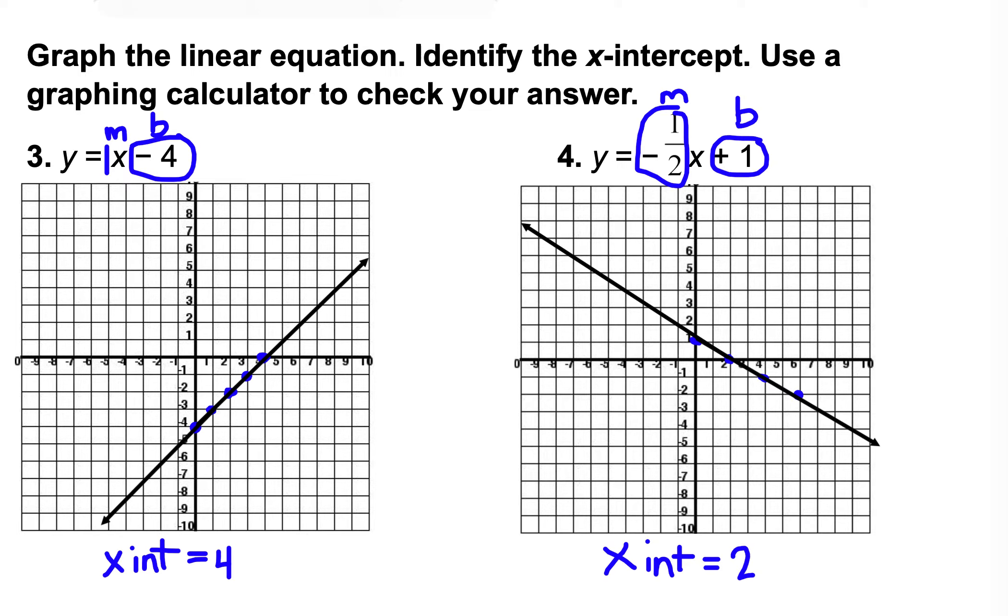For number 3, your slope is 1 and your y-intercept is negative 4. On your graph, you start on the y-axis and go down to negative 4. There wasn't a number in front of that x, that means a slope of 1, going up 1 over 1, making a point, up 1 over 1, making a point, and so on until you have 2 or 3 points. Then you can extend your line. It asked us to find the x-intercept. Your x-intercept is 4 because when you continue that pattern, it hits the x-axis at 4.